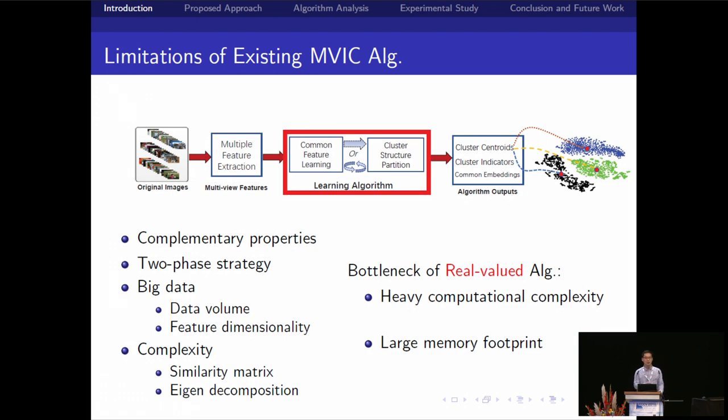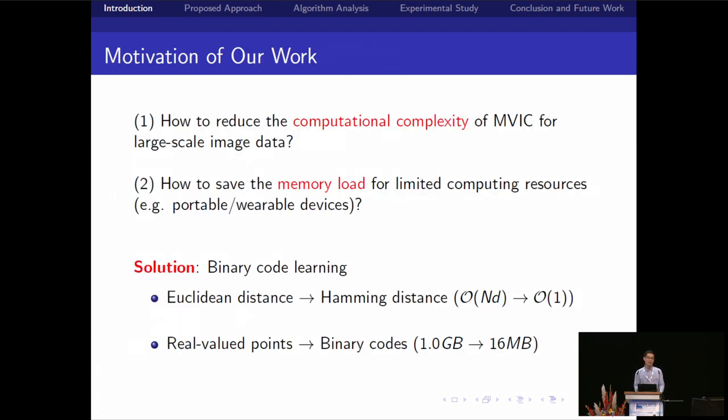Until now, as we know, almost most of the existing multi-view image cluster algorithms are real-value ones. So they have two main bottlenecks: the heavy computing complexity and the large memory overhead footprint cost. And they cannot be scalable to big data because the complexity is very high. The main motivation of our work is how to economize the cluster of big data and reduce the computing complexity and save the memory overhead.